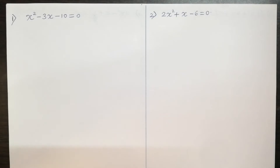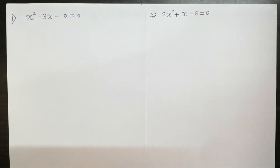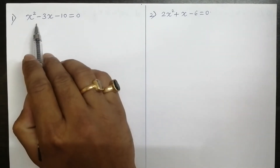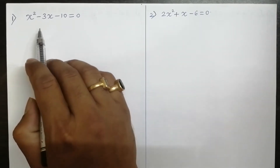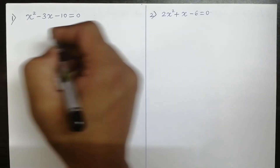Now we will start Exercise 4.2. The first question asks us to find the roots of the following quadratic equations by factorization method. I described the factorization method in the previous video. In this question, you have to apply the factorization method. The first equation is x² - 3x - 10 = 0.